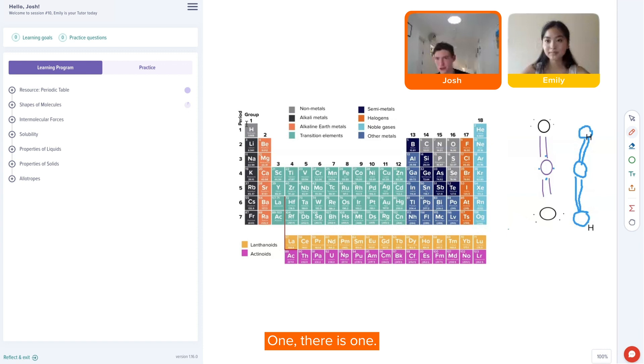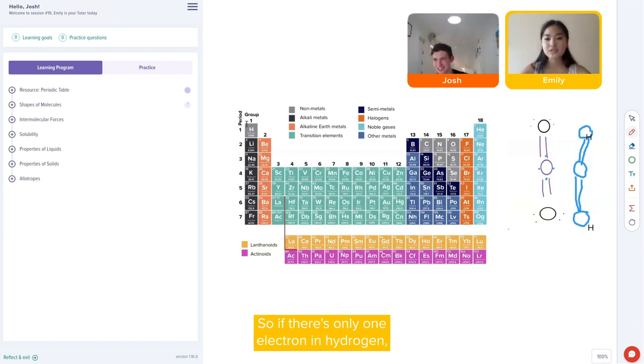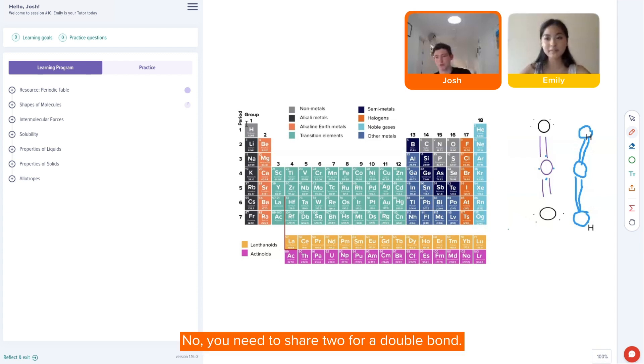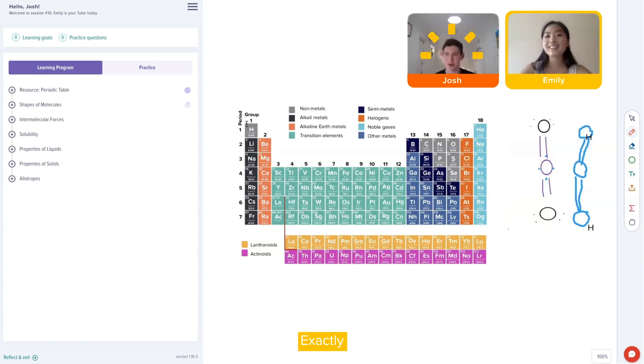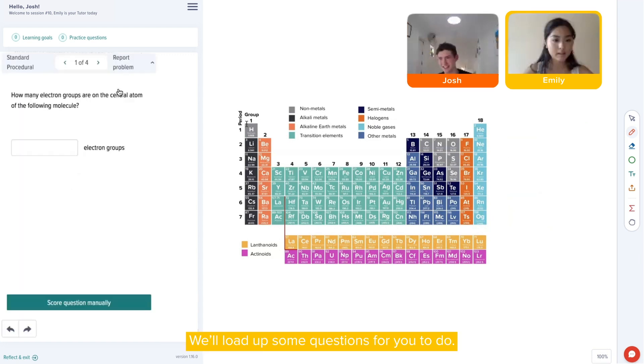One. Yes, exactly. So if there's only one electron in hydrogen, do you think it's possible to form a double bond? No, you need to share two for a double bond. Exactly. Let me load up some questions for you to do.